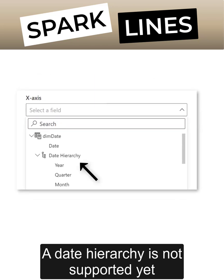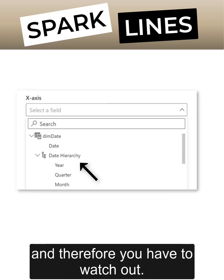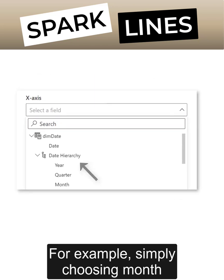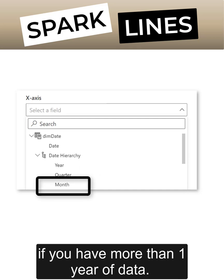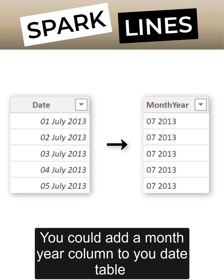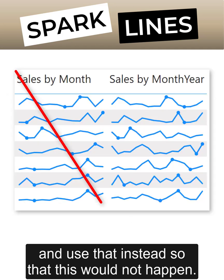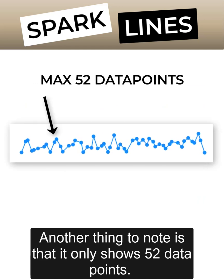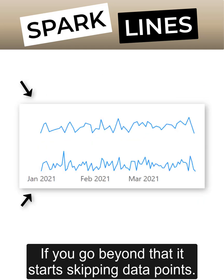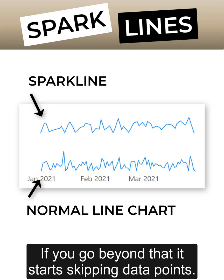A date hierarchy is not supported yet, so you have to watch out. For example, simply choosing 'Month' would aggregate the corresponding month values if you have more than one year of data. You could add a Month-Year column to your date table and use that instead. Another thing to note is that sparklines only show 52 data points — if you go beyond that, it starts skipping data points.